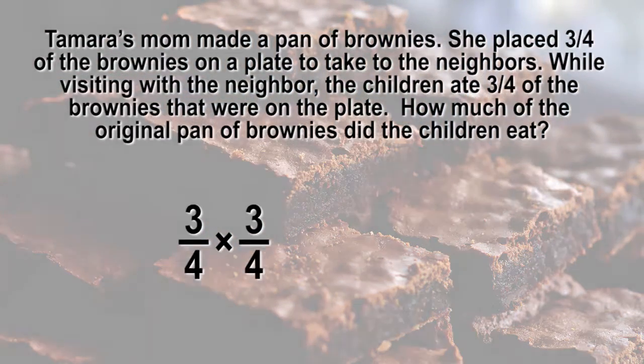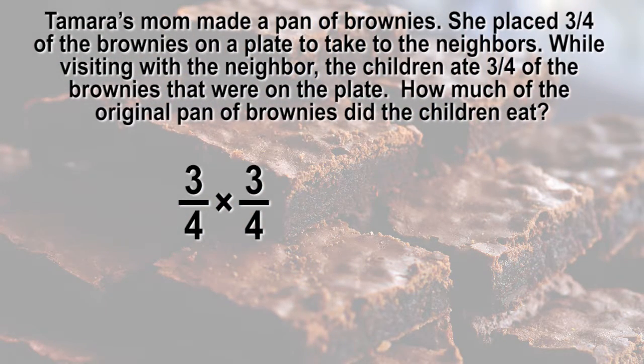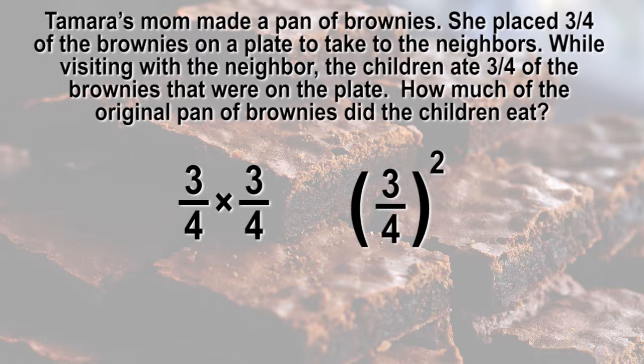The multiplication expression is three-fourths times three-fourths, or three-fourths raised to the power of two. Using parentheses around the fraction implies that the entire fraction is being raised to a power. Without the parentheses, only the numerator is being raised. Three-fourths to the power of two equals nine-sixteenths. The children ate nine-sixteenths of the pan of brownies.